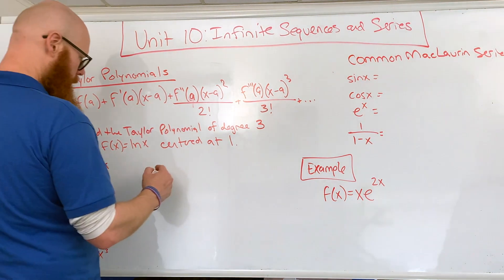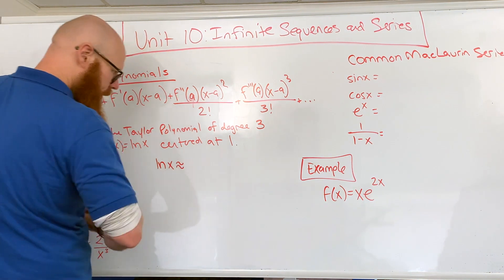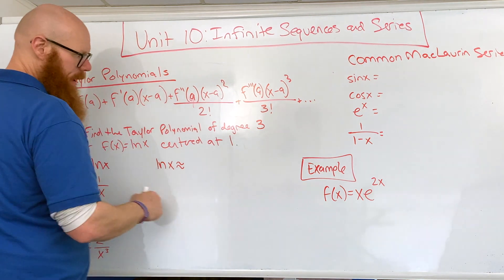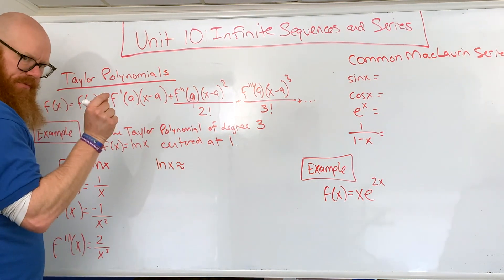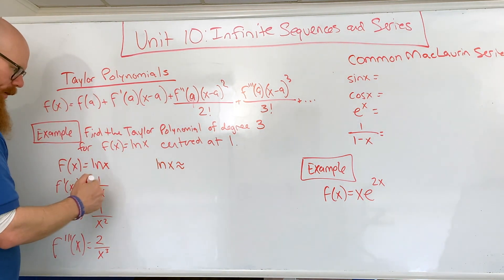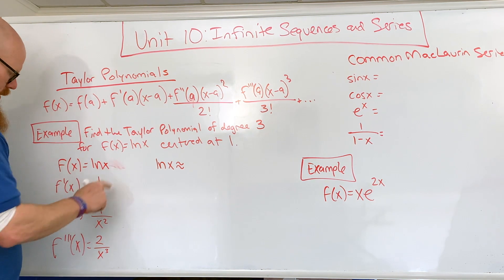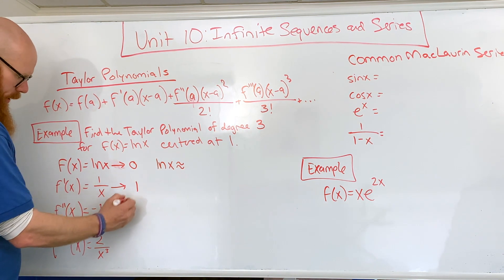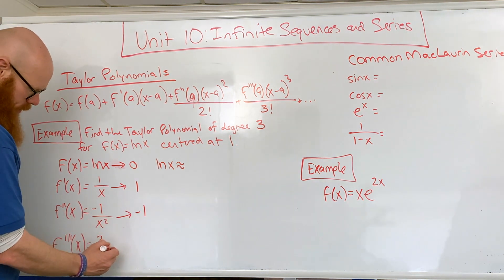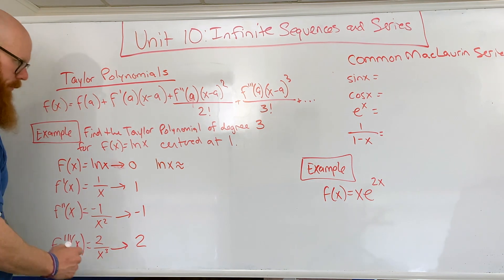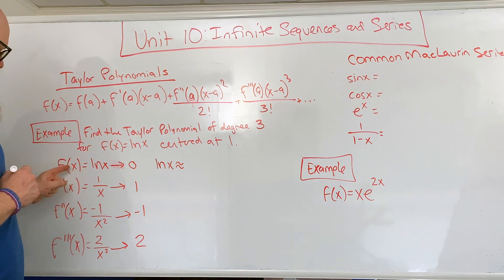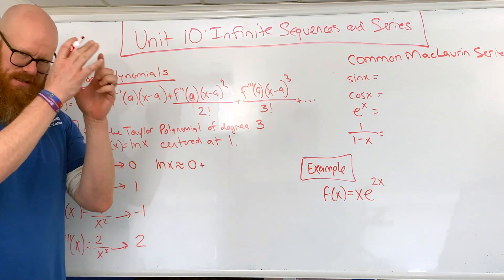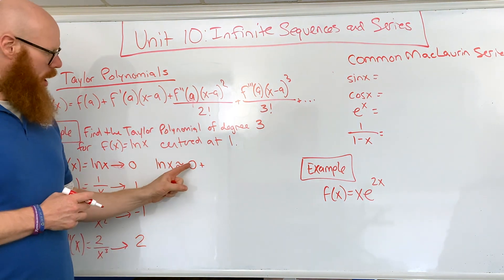For our approximation, ln(x) is going to be centered at 1. So we need to find f(a), f′(a), f″(a), and f‴(a), where a is the center — which is 1. We substitute 1 into each derivative: plugging into ln(x) gives 0; into 1/x gives 1; into −1/x² gives −1; and into 2/x³ gives 2. I'll write 0 plus just so you can see all the terms — that value could be nonzero in another problem.